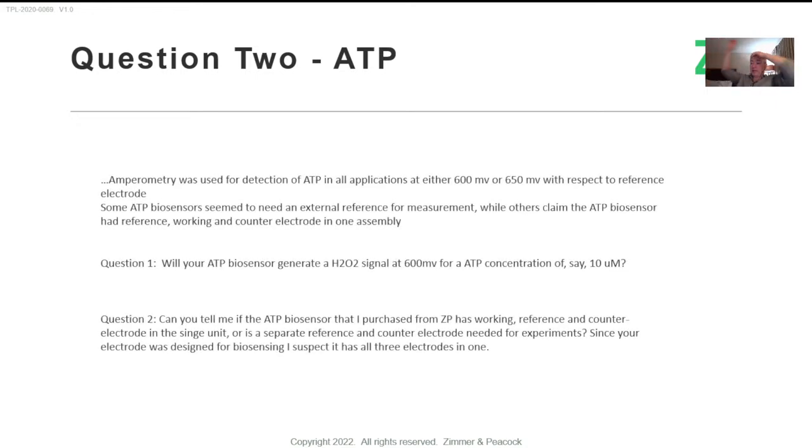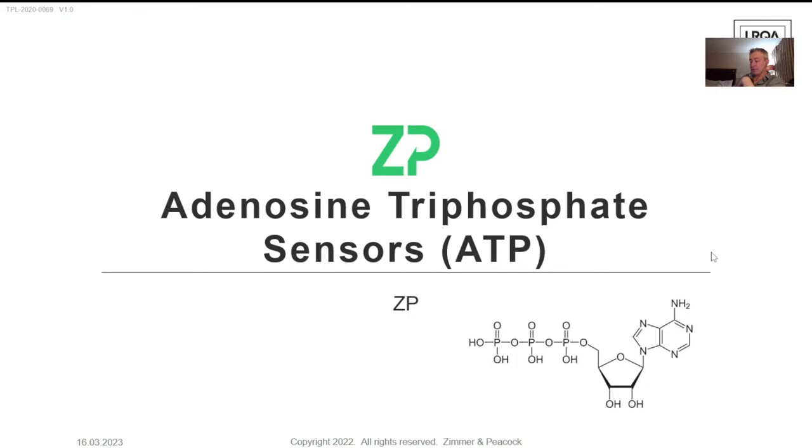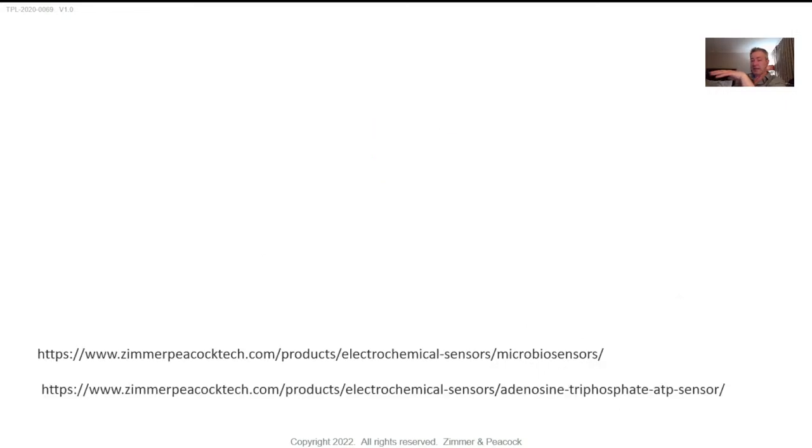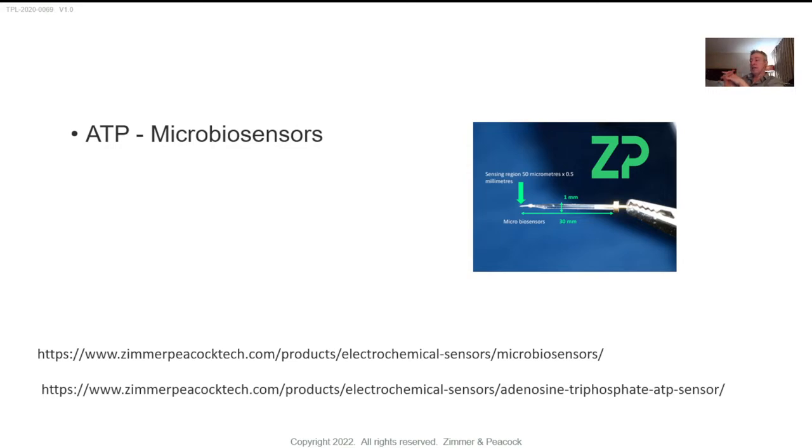Question number two - at ZP, somebody's very interested in our ATP sensor, our adenosine triphosphate sensor. The ATP sensor works at 600 to 650 millivolts - we'll recommend 650 millivolts, so it's an amperometric type sensor. We've got a couple of form factors. One is a microbiome sensor, and one is more of a screen-printed electrode form factor. This is ATP itself, adenosine triphosphate. Any links, I've already put them underneath the video. So we do have the microbiome sensor. The microbiome sensor is a working electrode only.